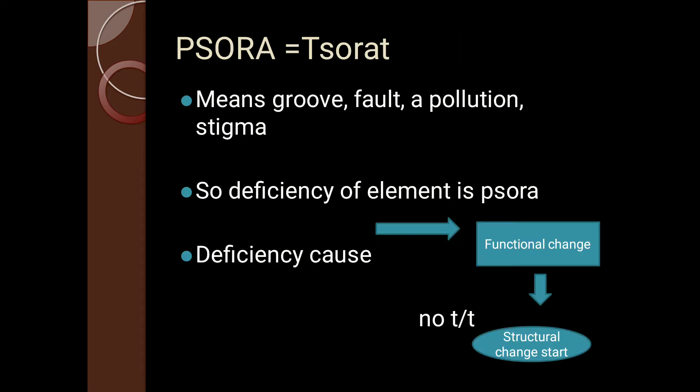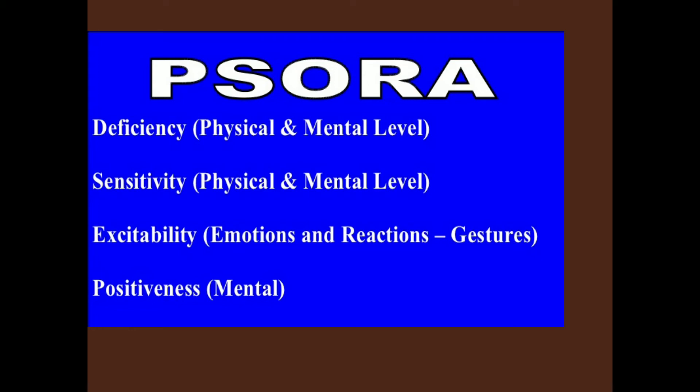Psora is derived from the word 'tesorat,' which means groove, fault, pollution, and stigma. The deficiency of an element is Psora — groove, fault — meaning deficiency causes functional changes. Psora is a deficiency at the physical and mental level. Its core features are sensitivity, excitability, and positiveness — these are the Psoric core.